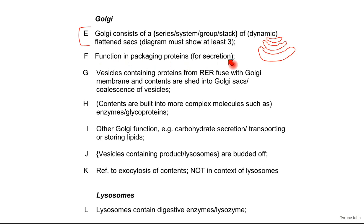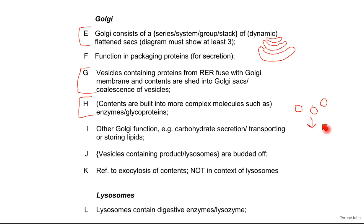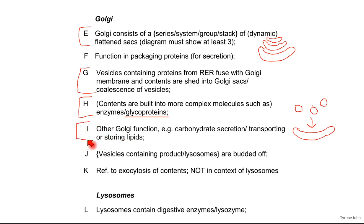Point F is function: packaging proteins for secretion. The next point covers vesicles containing proteins from the rough ER fusing with the Golgi — lots of vesicles travel to the Golgi and actually make up the Golgi as well. Point H is about the production of glycoproteins, where you're adding sugar molecules to the protein. Point I covers further functions: it secretes carbohydrates and can transport or store lipids.